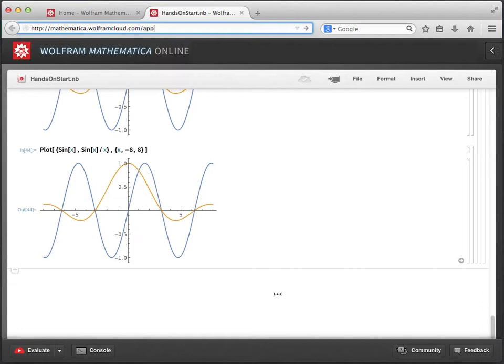We can see that by default Mathematica Online colors the plots differently so that we can tell them apart. But we can go even further by using an option to tell Mathematica Online to make a legend for us. Let's put the cursor between the right curly brace and the right square bracket.